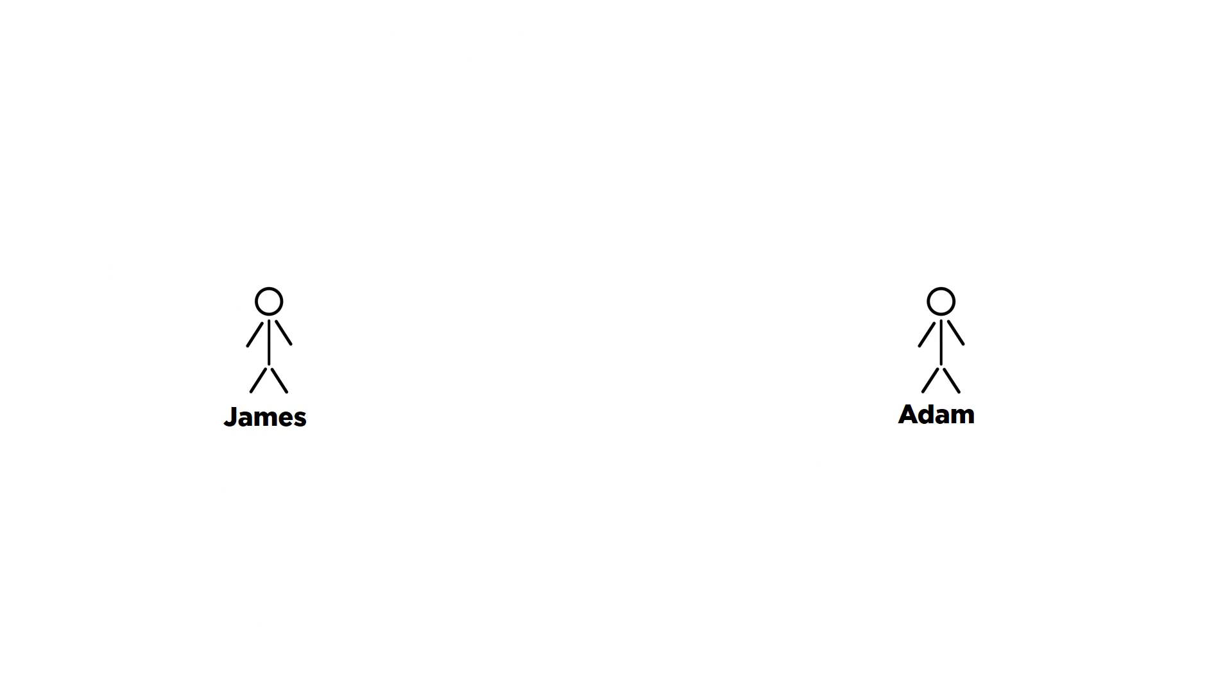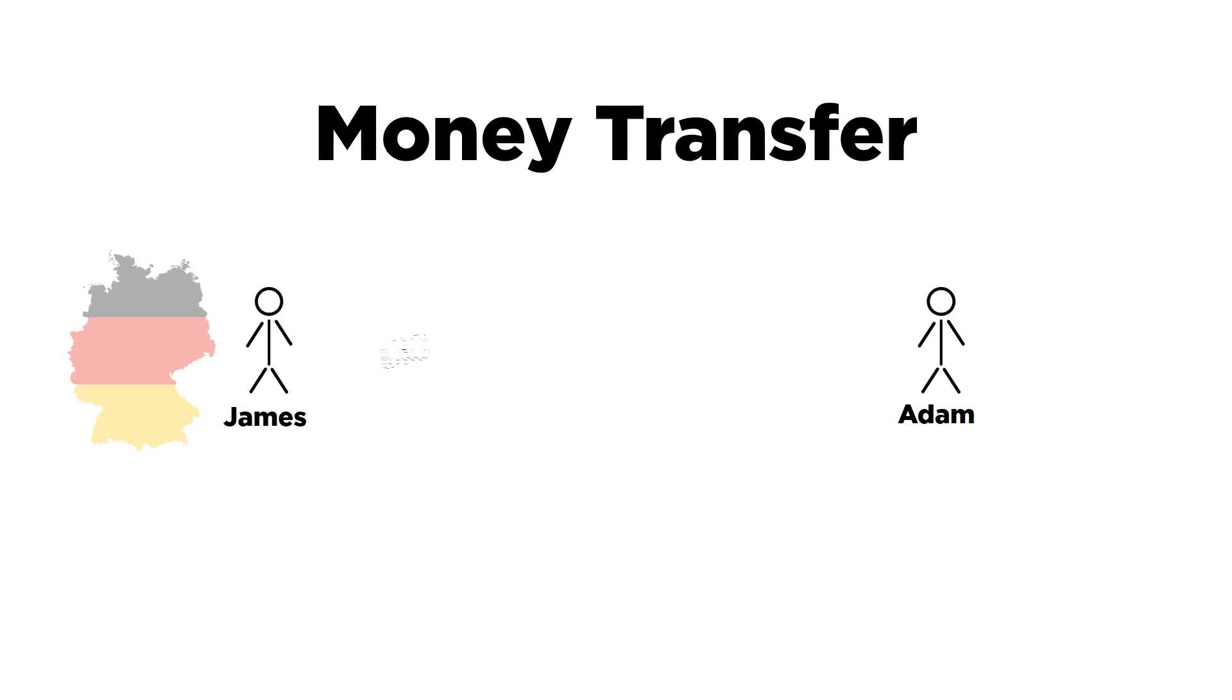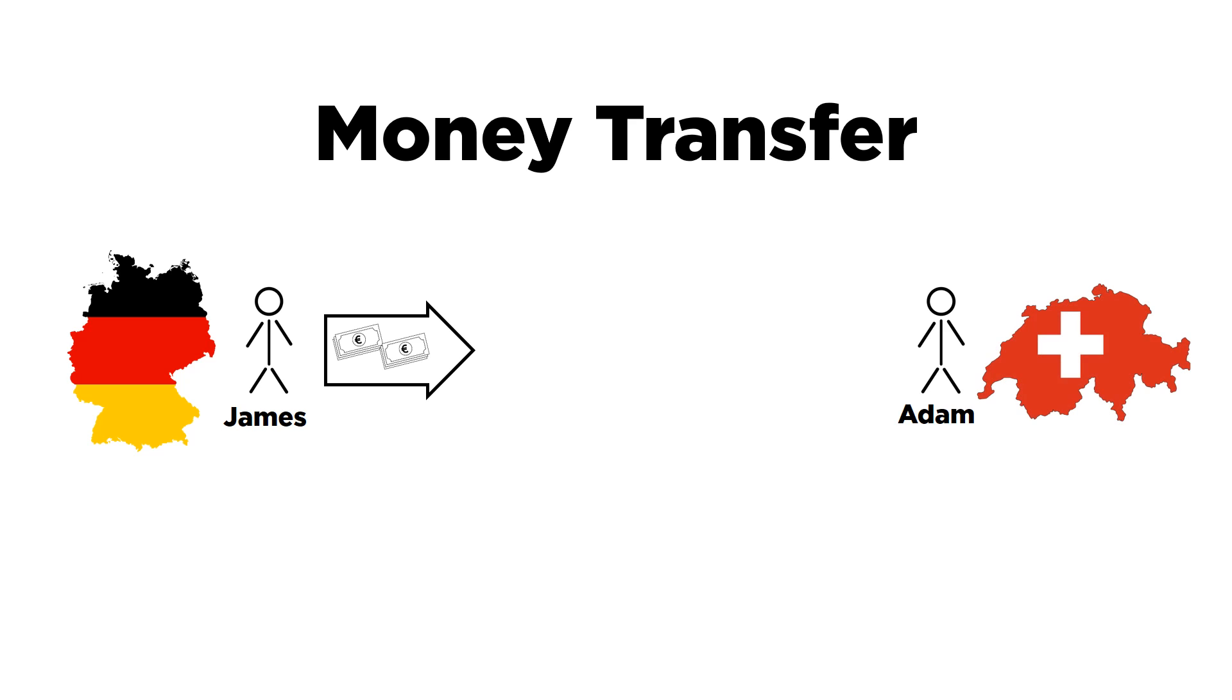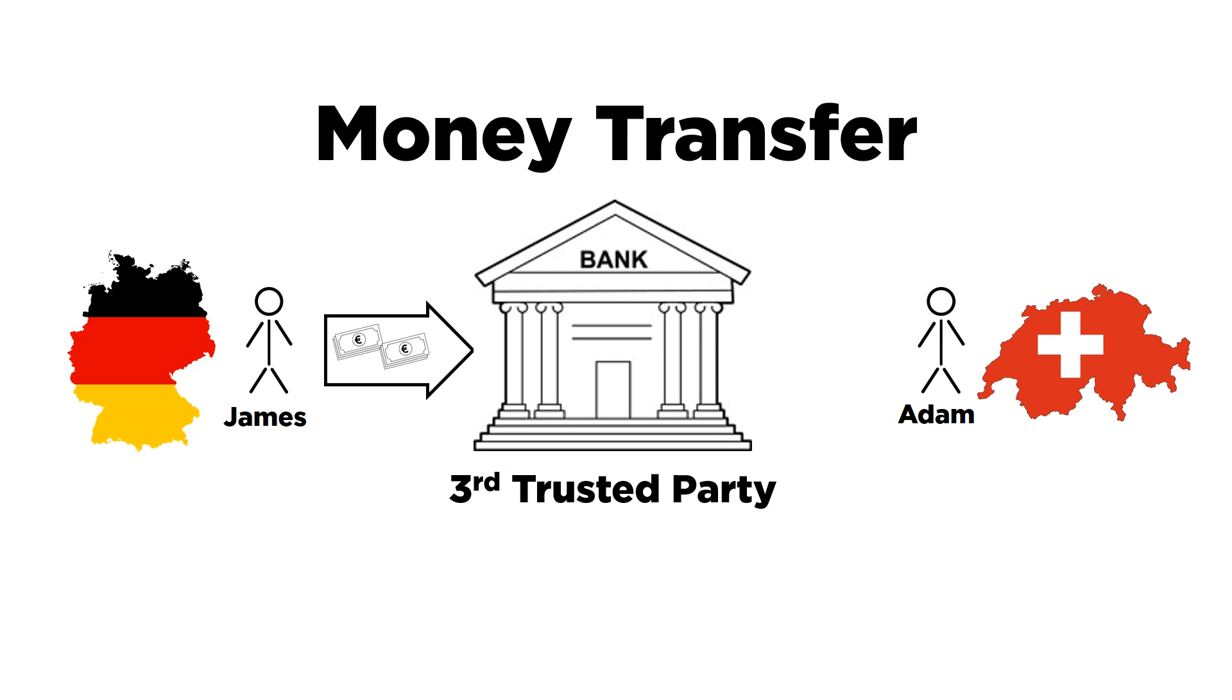Blockchain helps solve the problem of money transfer. For example, James who lives in Germany wants to send money to Adam who lives in Switzerland. The conventional way is that a trusted third party, normally a bank, gets involved between these two persons to facilitate this transfer of money. So James contacts his bank to send money to Adam.